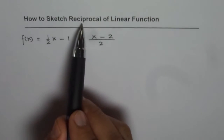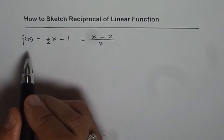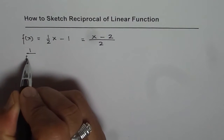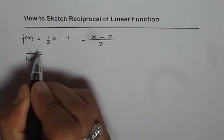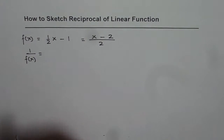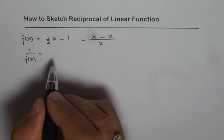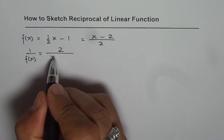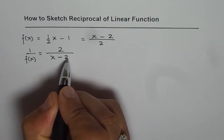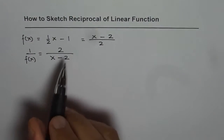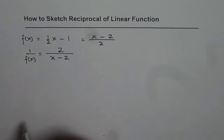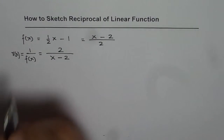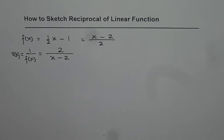When we say reciprocal, we mean 1 over f of x. So 1 over f of x becomes the reciprocal of this function. So 1 over f of x equals 2 over (x minus 2) — the numerator becomes denominator and the denominator becomes numerator. Let me call this function r of x, the reciprocal of f of x.